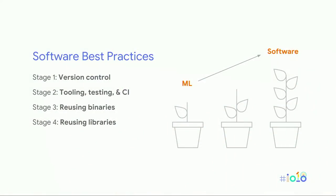If we look at software engineering over the years, we see growth. As we discover new tools and best practices, we're getting more effective and efficient. We're seeing the same kind of growth on the machine learning side — discovering new best practices and new tools. The catch is that this growth is maybe 10 or 15 years behind software engineering, and we're also rediscovering a lot of the same things, but in a machine learning context.